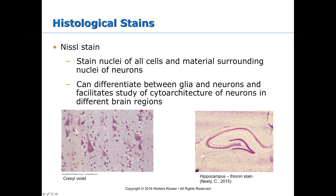These purple stained dots are all cell bodies, and those collections of cell bodies give the hippocampus its structure in particular regions. You have the dentate gyrus, the CA3, the CA2, the CA1 fields, etc.